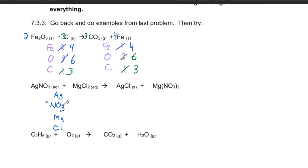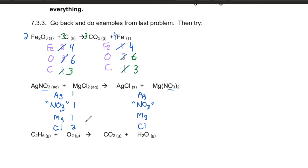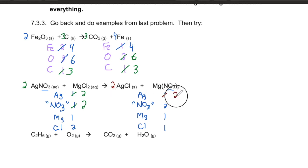For the nitrate example, we treat NO₃ as one piece — it stays together on both the left and right sides. On the left: one silver, one nitrate, one magnesium, two chlorine. On the right: one silver, two nitrate, one magnesium, one chlorine. We need to increase the nitrate, so we put a 2 in front of silver nitrate, giving two silver and two nitrate. Now silver and chlorine are too low on the right, so we put a 2 in front of silver chloride, giving two silver and two chlorine. Now it's balanced.